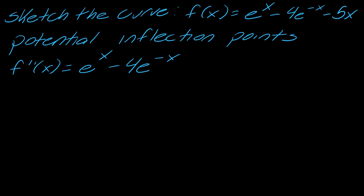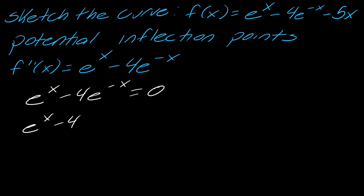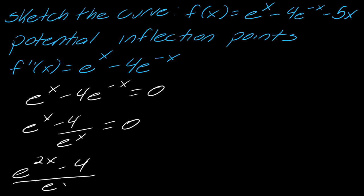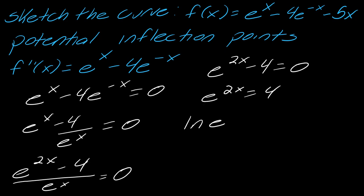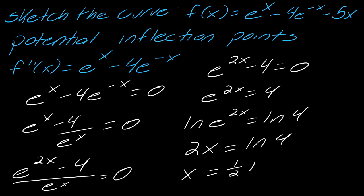Next up, we want to find any potential inflection points. I've got the second derivative, and it's going to be a very similar approach — setting it equal to zero and working with the same fraction technique. We can set e to the 2x minus 4 equal to zero to find where e to the 2x equals 4. Taking the natural log of each side gives 2x equals ln(4), so x equals one half times ln(4). And using logarithm properties, one half times ln(4) equals ln(4 to the one half) which is just ln(2). So the potential inflection point is at x equals ln(2).